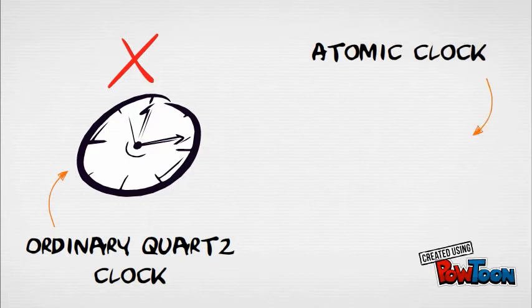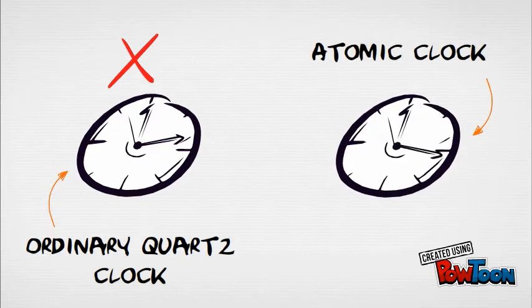In an atomic clock, however, the oscillation of the atoms is used to check the frequency of the quartz device, which is what gives the clock such amazing long-term accuracy.